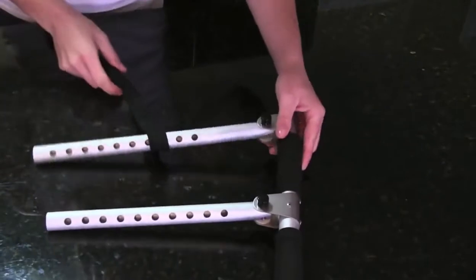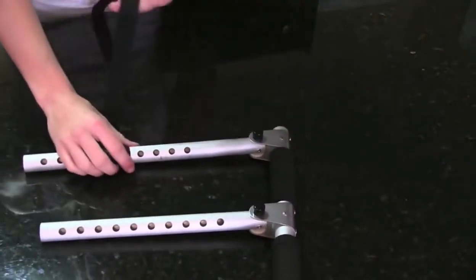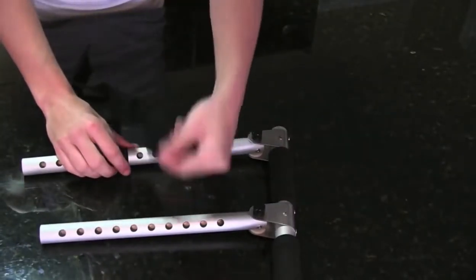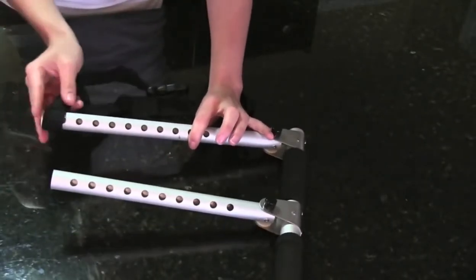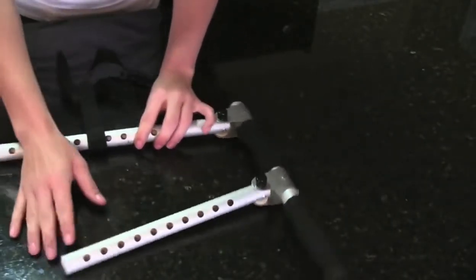Here we have the control handle assembly. Attached is the support strap. Make sure that the loop goes right through the longer side of the control handle assembly.